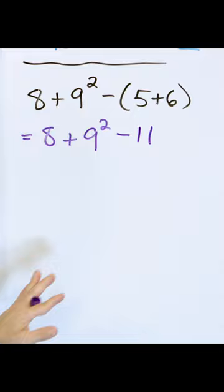And the rest of the problem just needs to be rewritten. This became 11. Next, after parentheses, exponents. Here we have a nine squared. So let's go over here.